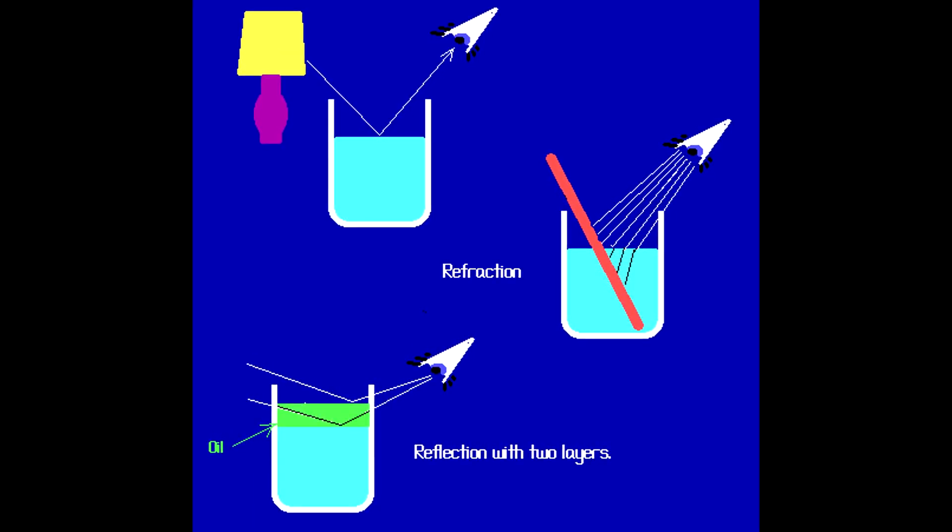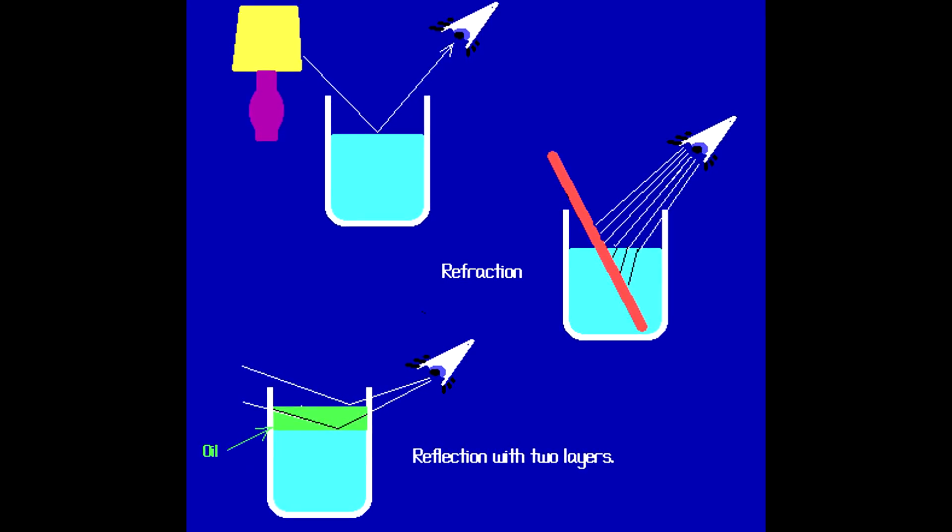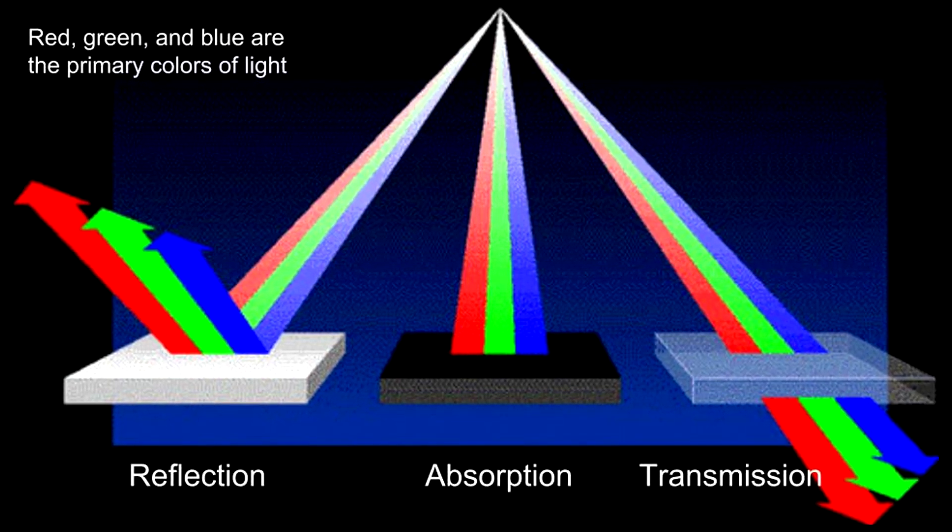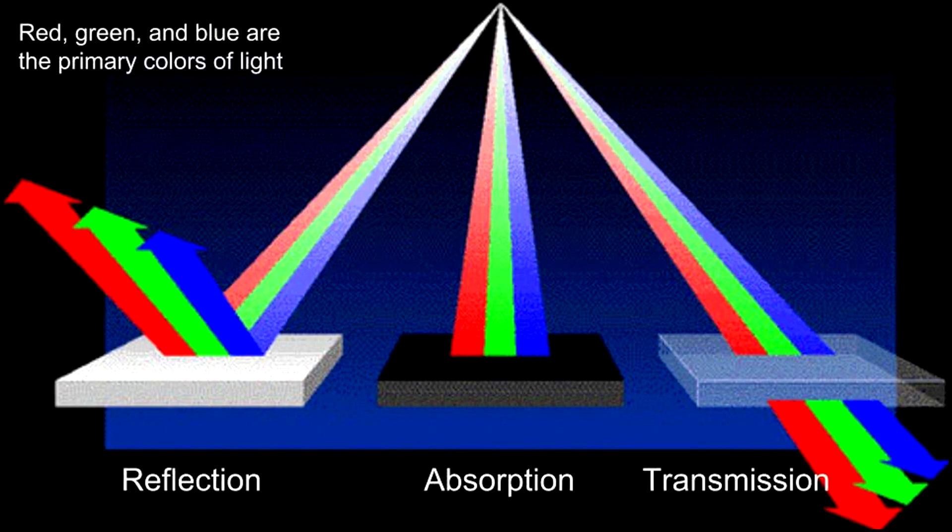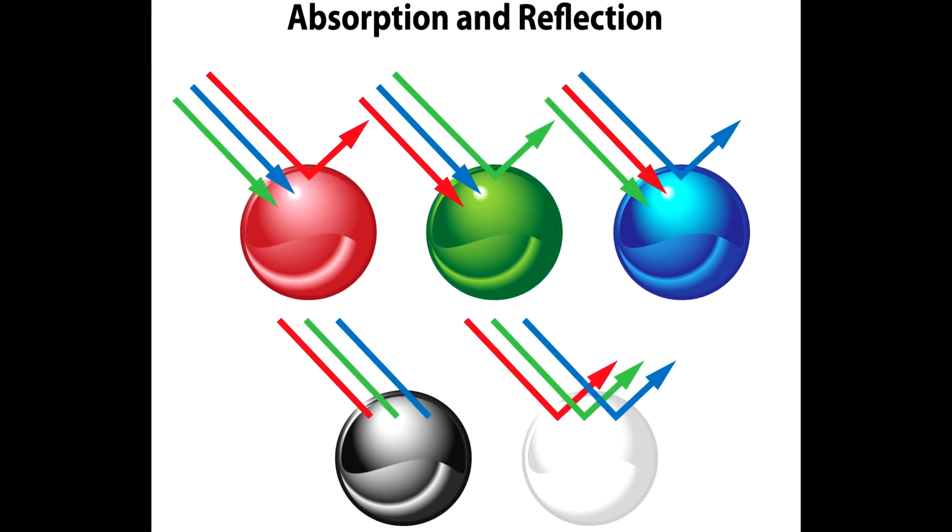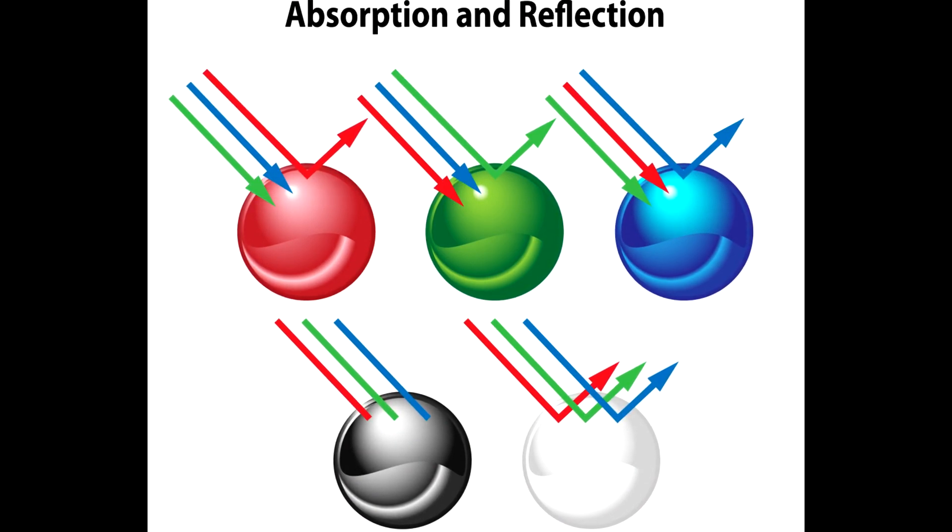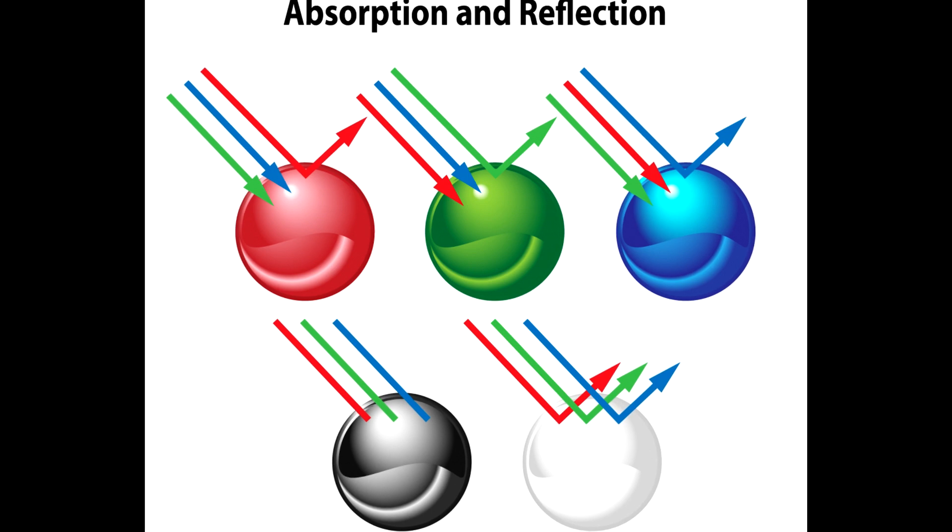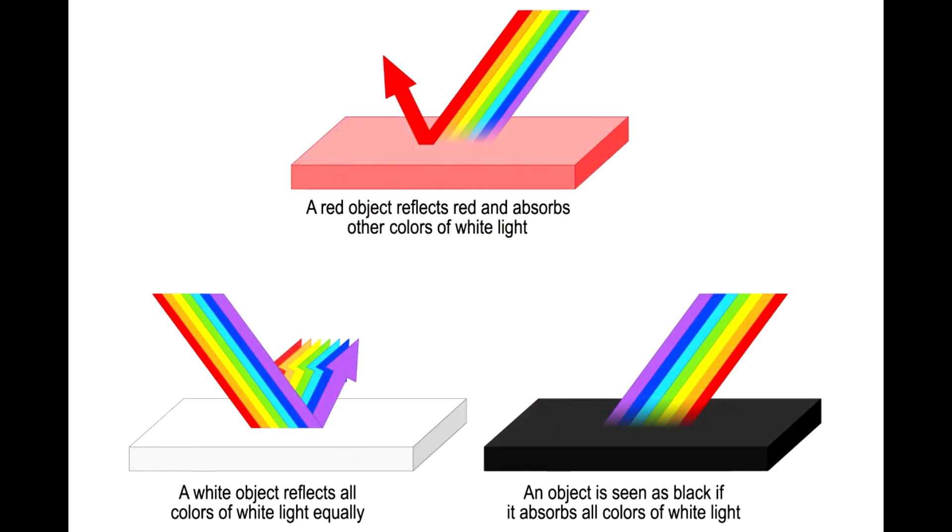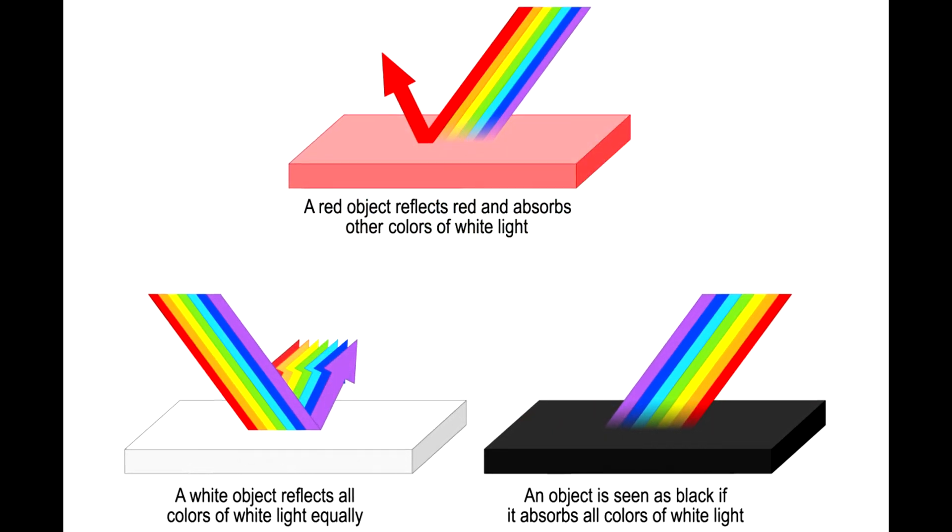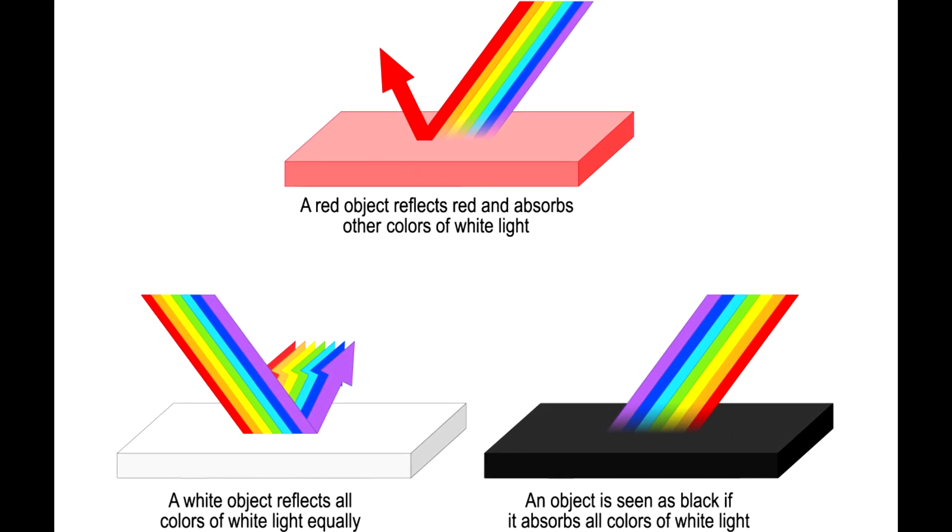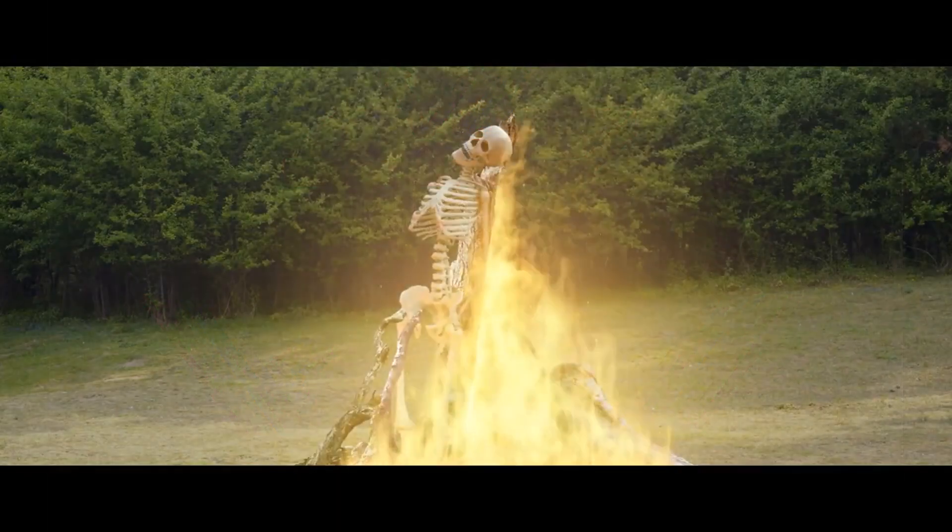Finally, absorption is the process by which light hitting the surface of an object is converted into another form of energy, such as heat. This occurs due to the interaction of light waves with material particles. For example, when an object is illuminated with blue light, the object may absorb all the blue waves and reflect red and green waves. As a result, the object will appear greenish-red. This explains why objects have certain colors. They absorb some light waves and reflect others, and is not the work of sorcerers.